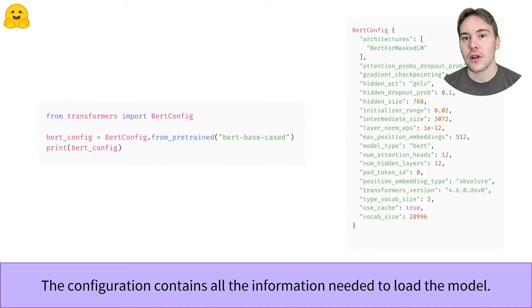As we said before, the configuration of a model is a blueprint that contains all the information necessary to create the model architecture. For instance, the BERT model associated with the bert-base-cased checkpoint has 12 layers, a hidden size of 768, and a vocabulary size of 28,996.